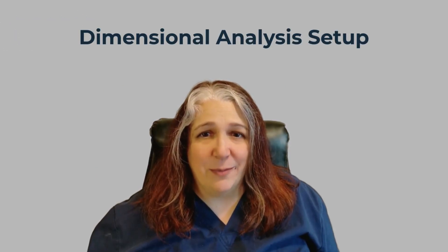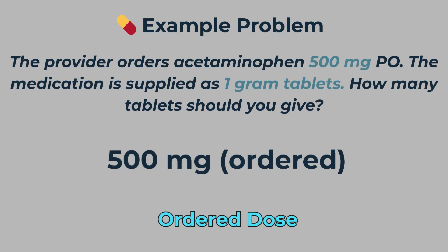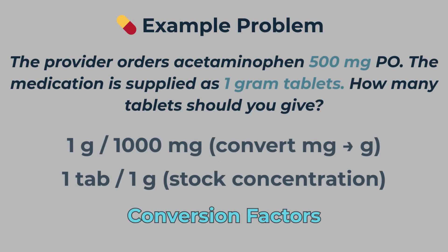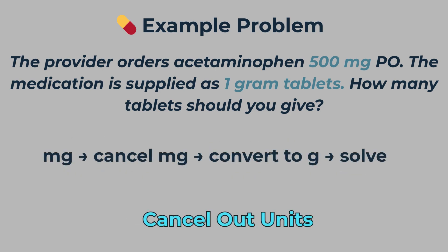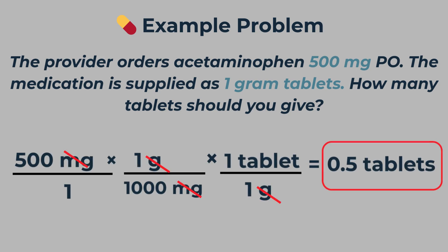Every dimensional analysis problem follows the same structure. You begin with what you know — the first step is usually the ordered dose. From there, you multiply by one or more conversion factors, each one helping you move closer to the unit you're solving for. At every step, you cancel out the units you no longer need. The final unit is your answer. Dimensional analysis isn't about memorizing formulas — it's about thinking with clarity and purpose, and that's what makes it safe, simple, and flexible enough to use for any medication calculation you'll face in clinical practice.